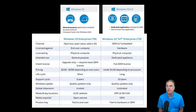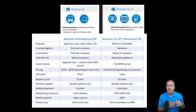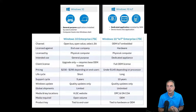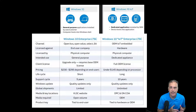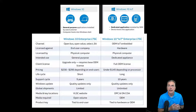Going down the chart and comparing them side by side: the only way to get the non-IoT LTSC version is through the open volume channel. That comes with a lot of hurdles. In open volume — open business, open value, select enterprise agreements — the product is tied to the end user. When placing the order, you have to license it against the end user, providing the end user's company information and an email address.